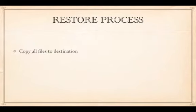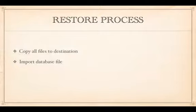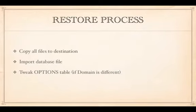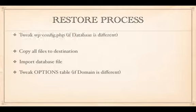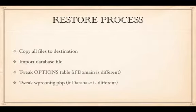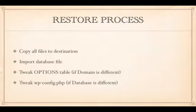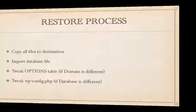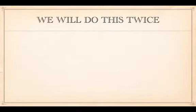Here's how the restore process works: first, copy all backup files into the new system, local or remote. Next, import the database file into an empty database. If using a different domain, tweak the options table — specifically siteURL and home — in phpMyAdmin. Finally, update the wp-config file so WordPress knows the new database name, user, host, and password.